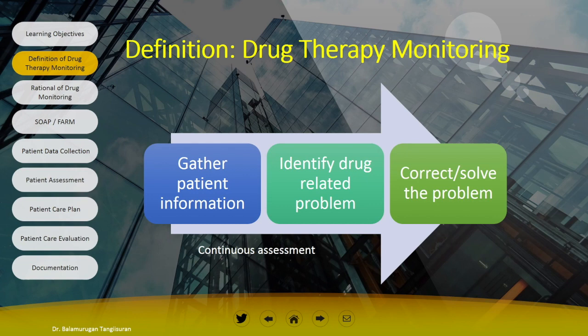Drug therapy monitoring is a process where the pharmacist gathers patient information. This gathering of patient information can occur in any ward setting. Once you gather the patient information, you need to identify the drug-related problems — you can call it drug therapy problem, medication-related problem, or pharmaceutical care issues. It is not useful just to identify the problems; we have to provide the solution or correction to solve them, and this process must be a continuous assessment process to ensure drug therapy achieves the desired therapeutic outcome for every patient.